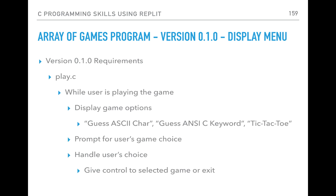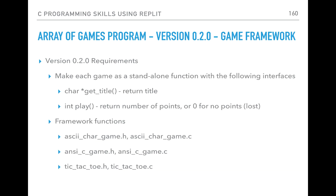The next version will implement play.c — while the user is playing, we'll display the game options as a menu, prompt for the user's choice, and handle it: either exit the game or play whichever game they selected.